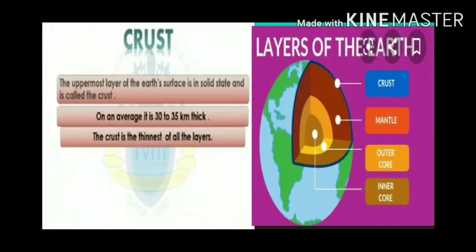The first layer is the crust. The uppermost layer of the earth's surface is in solid state and is called the crust. You can see in the figure the uppermost surface of the earth shown in blue. On an average, it is 30 to 35 kilometers thick. The crust is the thinnest of all the layers — it is very thin compared to the other layers.